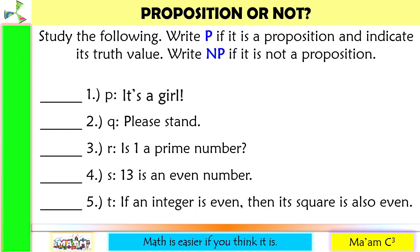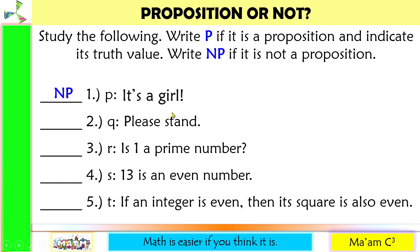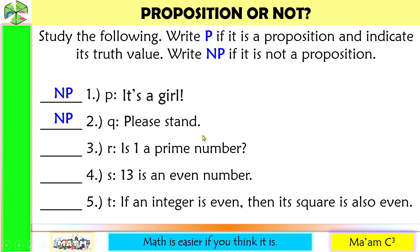Let's have an activity. Write capital P if it is a proposition and indicate its truth value; write capital NP if it is not a proposition. Number one: 'It's a girl!' — this is not a proposition, because this is an exclamatory sentence, not a declarative sentence. Remember, a proposition is a declarative sentence. Number two: 'Please stand.' — this is not a proposition; it is an imperative sentence, not a declarative sentence. Number three: 'Is one a prime number?' — you are asking here, so this is not a declarative sentence but an interrogative sentence, so this is not a proposition.